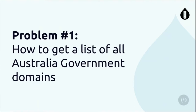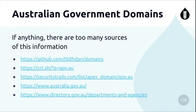Problem number one: where is a list? Can someone just show me the list? It's tricky. There's a few places you can grab it from, some more interesting than others. There's a GitHub repo, there's Let's Encrypt - another fun place to look. Security Trails. There's all sorts of fun things in there. Or you could just start from a seed site like australia.gov and directory.gov.